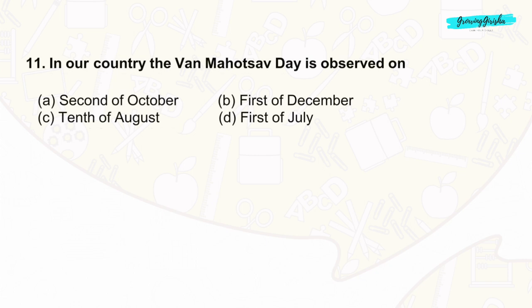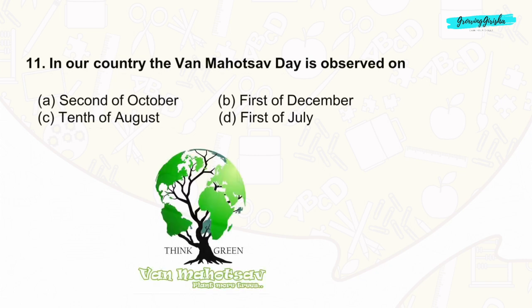Question 11: Van Mahotsav is an annual tree planting festival celebrated in India, typically during the first week of July. It is celebrated on the 1st of July. The correct answer is option D.